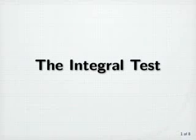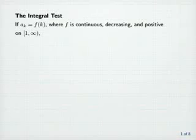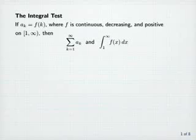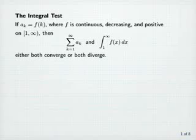The Integral Test. If a sub k equals f of k, where f is continuous, decreasing, and positive on the interval from 1 to infinity, then the series — the sum from k equals 1 to infinity of a sub k — and the improper integral from 1 to infinity of f of x dx either both converge or both diverge.